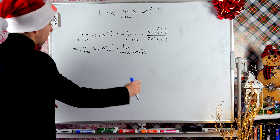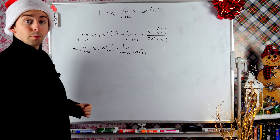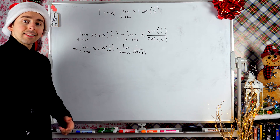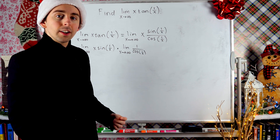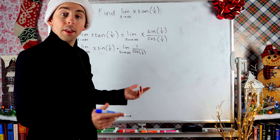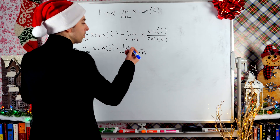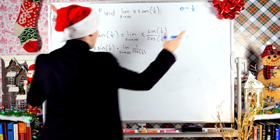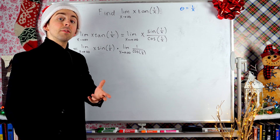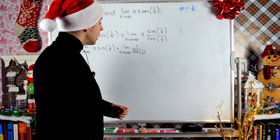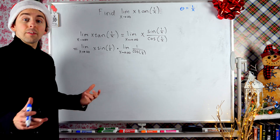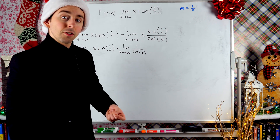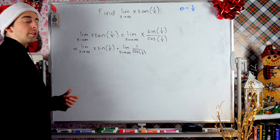Now how do we evaluate x times sine of 1 over x? I'd like to not have a 1 over x inside my sine function, so I'm going to re-express that using another variable. Let's say that theta is 1 over x. That way I can have just sine of theta instead of sine of 1 over x. If we're going to use theta instead of x, we've got to make sure we know how to re-express this limit in terms of theta. x is approaching infinity — that's where we're taking our limit.